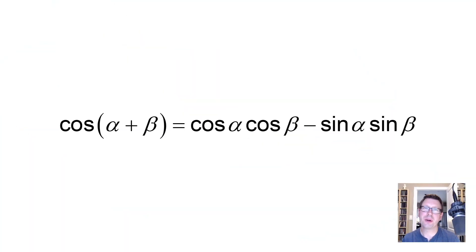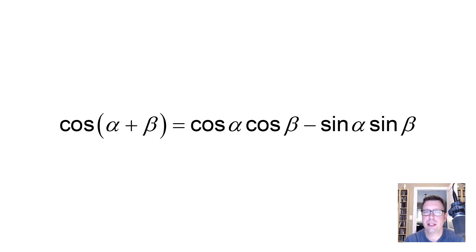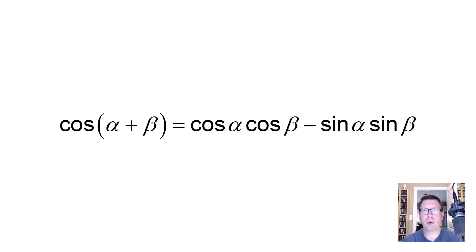Hello everyone. In this video we're going to take a look at the cosine addition formula. It states that the cosine of an angle alpha plus an angle beta is equal to the cosine of alpha times the cosine of beta minus the sine of alpha times the sine of beta. In this video we're going to derive this relationship and show where it comes from and why it's actually true.